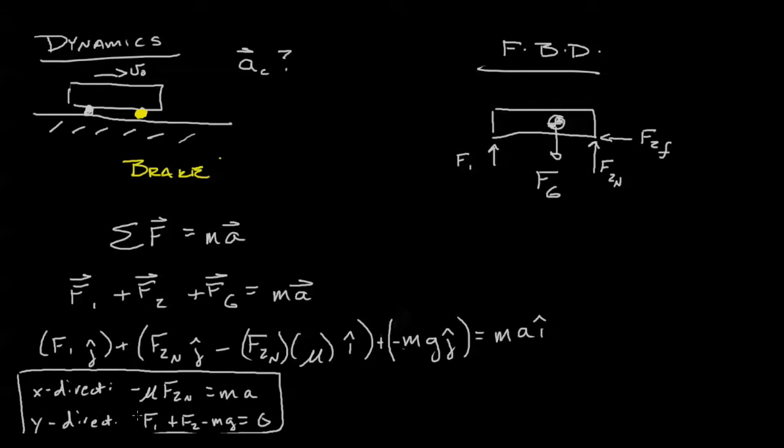Let me write out what that looks like. So here we have two equations. Our unknowns include force two, force one, and the acceleration. So we have three unknowns, two equations.